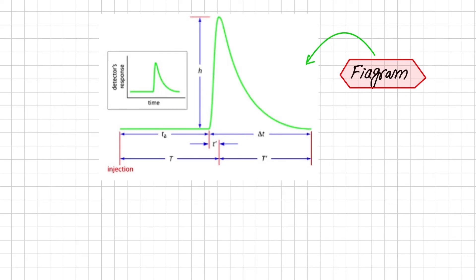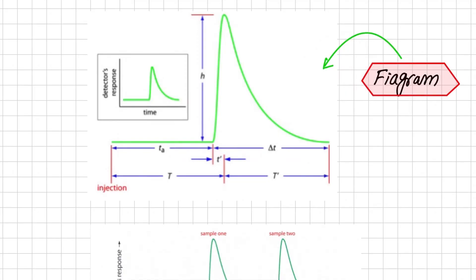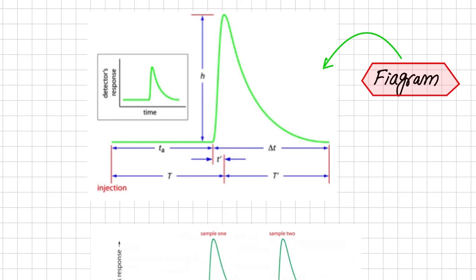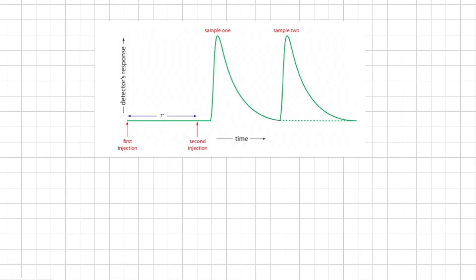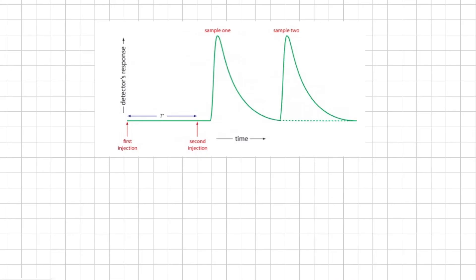The final characteristic parameter of the FIAgram is the sample's peak height, represented by H. Of the six parameters described, the most important are peak height and return time. Peak height is important because it is directly or indirectly related to the analyte concentration, and the sensitivity of an FIA method is determined by the peak height. Return time is important because it determines the frequency with which we inject samples. If we inject a second sample at time T′ after injecting the first sample, there is little overlap of the two FIA curves, giving us the maximum possible sampling rate.